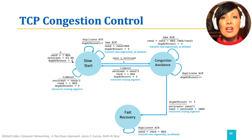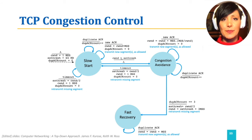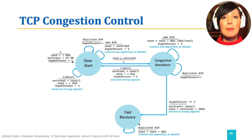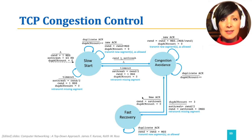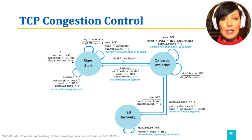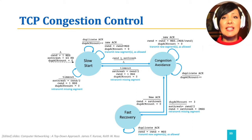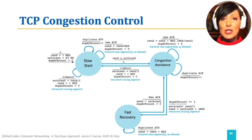Fast recovery is the state employed by some TCP implementations like TCP Reno. The arrival of a new ACK in the fast recovery state will result in going back to congestion avoidance, while setting the window size to the SS threshold value. During fast recovery state, the congestion window keeps increasing for incoming duplicate ACKs.